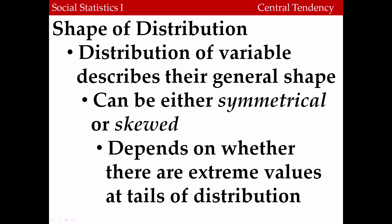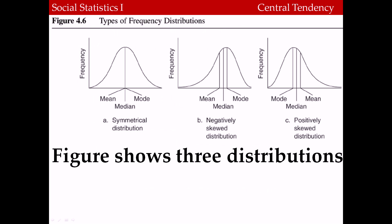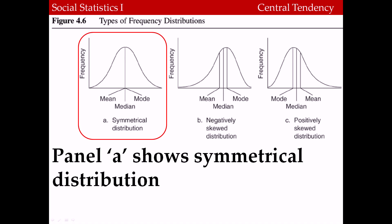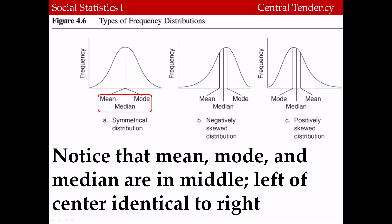This is an important consideration when we think about the shape of the distribution. Distributions can have two general kinds of shapes: symmetrical or skewed, depending on whether there are extreme values in the tails. Panel A shows a symmetrical distribution — one in which the mean, median, and mode are found in the middle of the distribution. The area under the curve below the mean, median, and mode is a mirror image of the area above. If we folded this distribution in half, the area below the mean would equal the area above the mean.